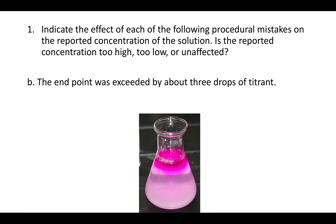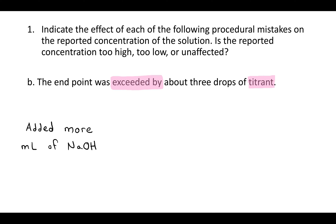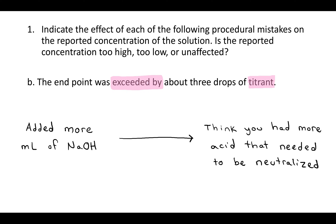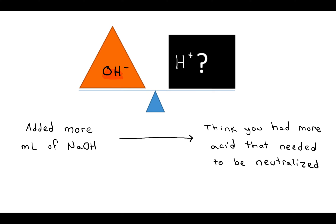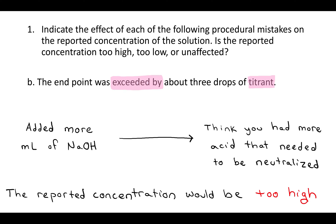For case B, the endpoint was exceeded by about three drops of titrant, and the titrant here is the sodium hydroxide. If you did that, you would have added more milliliters of sodium hydroxide than you should have. Therefore, you would think that there was more acid that needed to be neutralized than there really was, because you're assuming that however much NaOH you add, that's how much H-plus was there. So if you add too much OH, you'll think there was too much H-plus, and the reported concentration of the acid in the analyte would be too high.